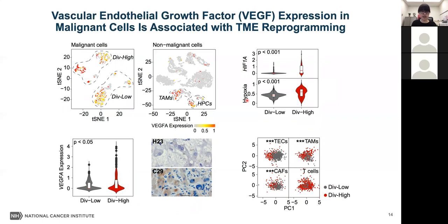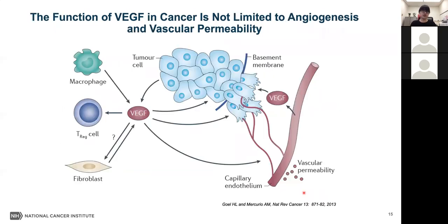I also investigated VEGFA downstream signaling as a functional surrogate in non-malignant cells. We found that VEGFA functional surrogate genes could discriminate endothelial cells, macrophages, and fibroblasts, but not T cells. The role of VEGF in tumor angiogenesis has been well documented. VEGF has multiple functions in the tumor microenvironment: beyond angiogenesis and vascular permeability, it may act in an autocrine manner to promote de-differentiation and EMT phenotype, enhance tumor cell invasion, function as a chemoattractant to recruit regulatory T cells to inhibit anti-tumor immune response, and may also affect fibroblasts to contribute to tumor growth. High-diversity malignant cells may produce more VEGF, which may in turn reprogram surrounding stromal cells to affect patient prognosis.